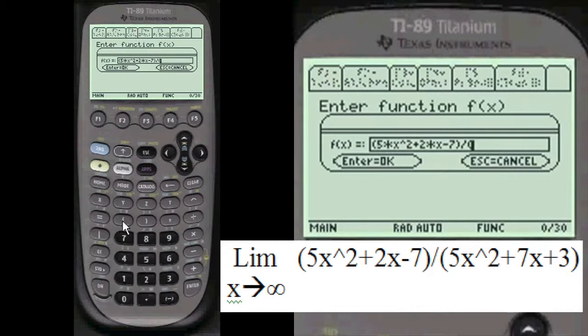Divided by parentheses, 5 times X squared plus 7 times X plus 3, close off the parentheses.